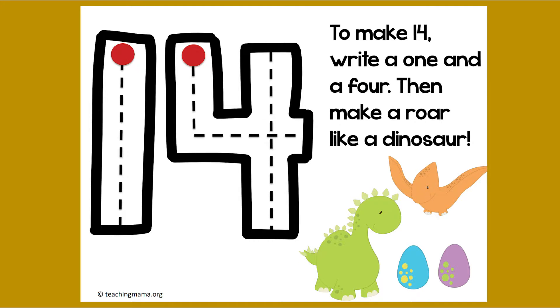Now turn on your magic writing fingers. We are going to make a 14. To make a 14, write a 1 and then a 4, then make a roar like a dinosaur. So here we go. Start up at the top. Make our 1, a big line down. Jump back up to the top and our 4 goes down and over, and jump back up to the top and down, down some more. Then make a roar like a dinosaur. Roar.